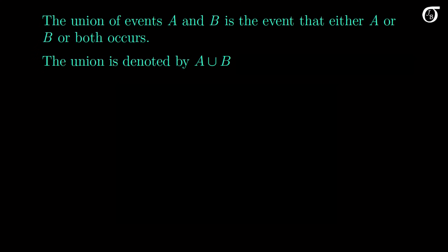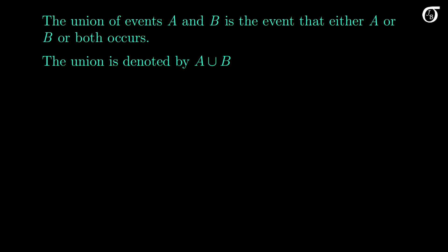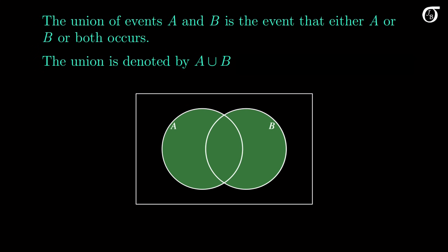We are also free to switch the ordering in the union of events. B union A, or B or A, is the same event as A union B, or A or B. Here's a Venn diagram representation of events A and B — the green region represents the union, everything that is in either A or B or both.